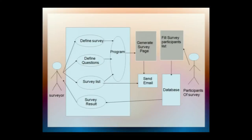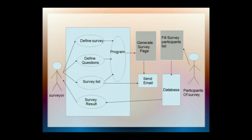First, the surveyor defines the survey and questions, prepares the survey list, and using this, a generic survey page is created. Using this list, we send emails to the participants. On the surveyor side, this process is complete. On the participant side, the participant fills in the survey details on the survey page, which are then stored in the database. The data stored in this database is then viewed by the surveyor.